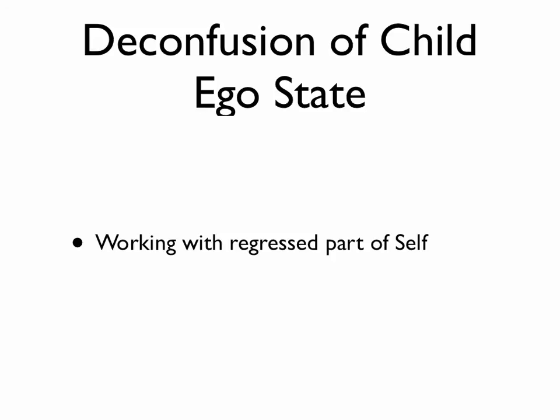So working with the deconfusion of the child ego state is specifically clearing up the contamination in the child ego state, so the adult is clear, healthy, robust, and we sort out the shames, the hurts, the anxieties of the child ego state.